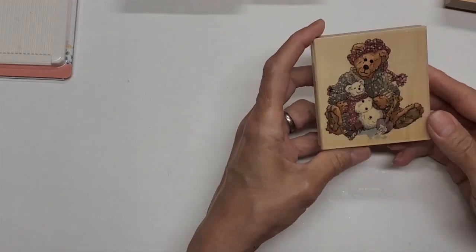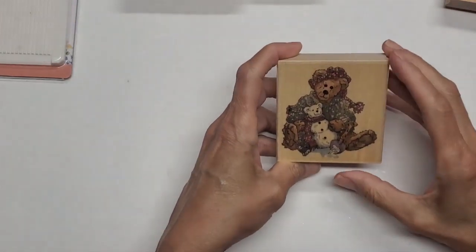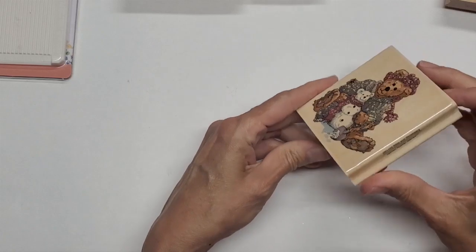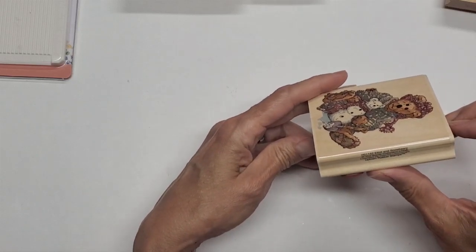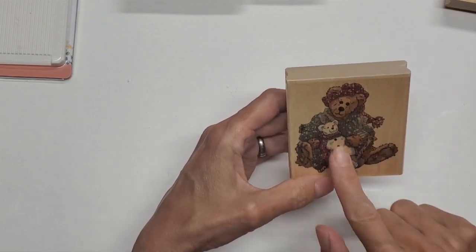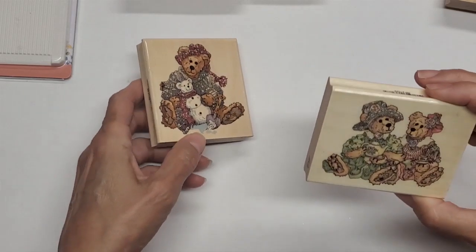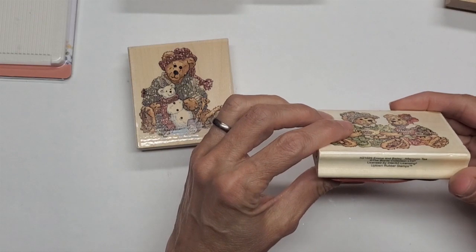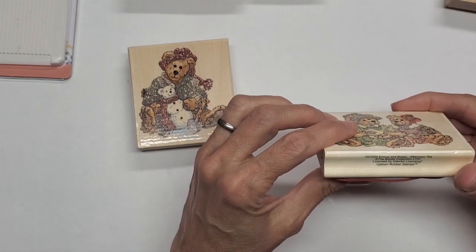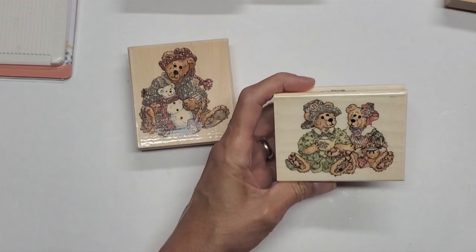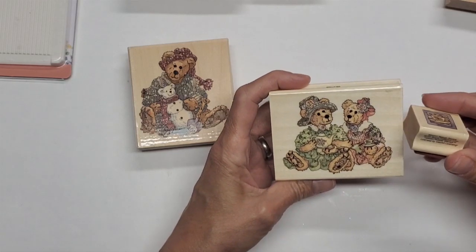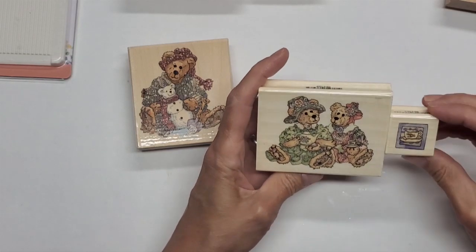And then these two are both Boyd's Bears. If you're familiar with Boyd's Bears stuffed animals, they are really sweet. So this is H21152 Elliot and Snowberry, got a little snowman there. And this one is H21029 Emma and Bailey Afternoon Tea.